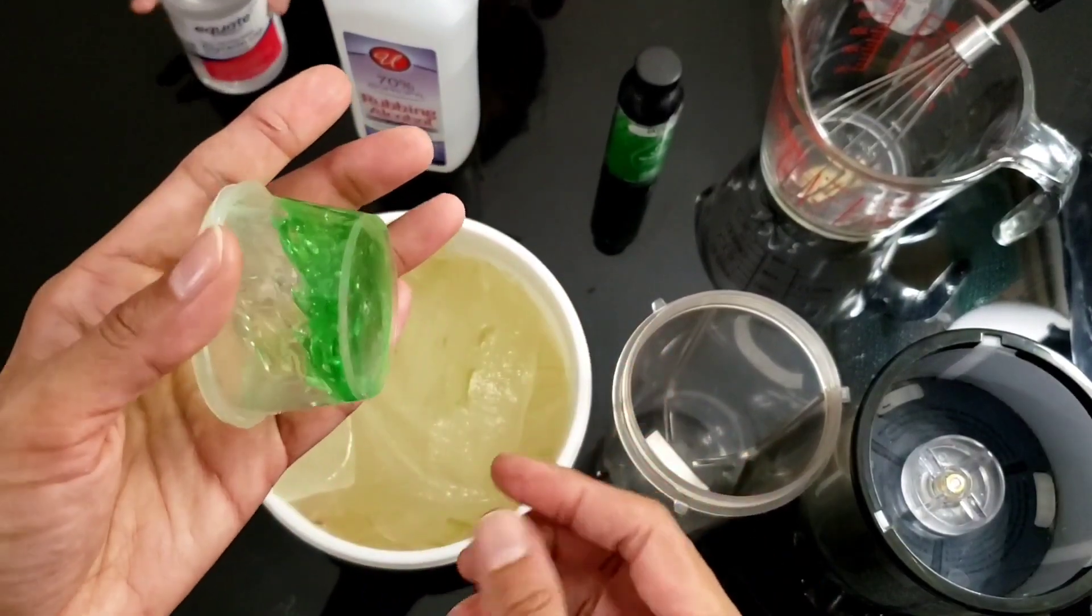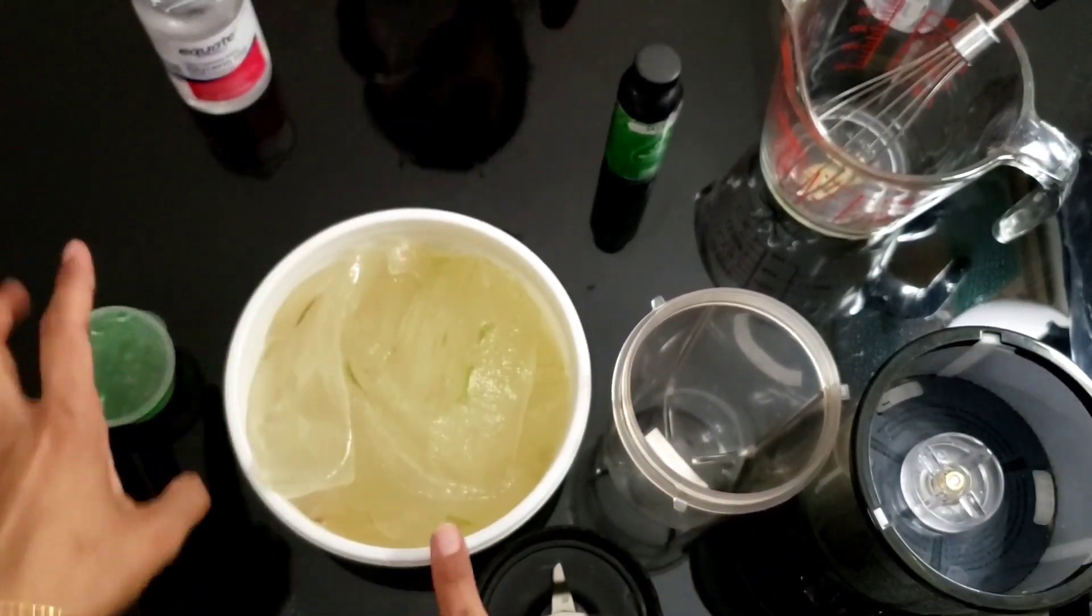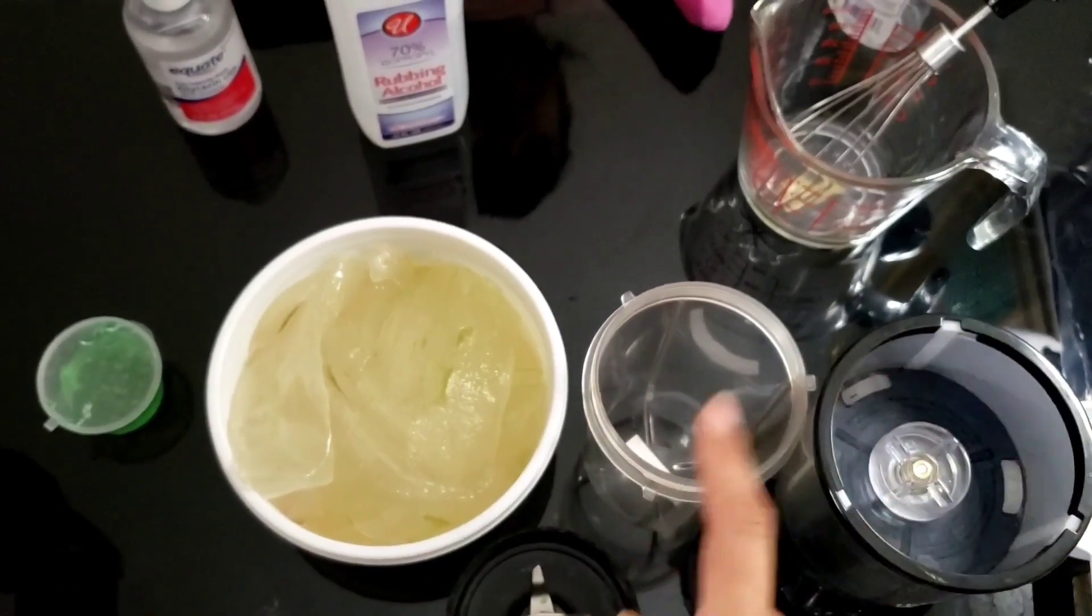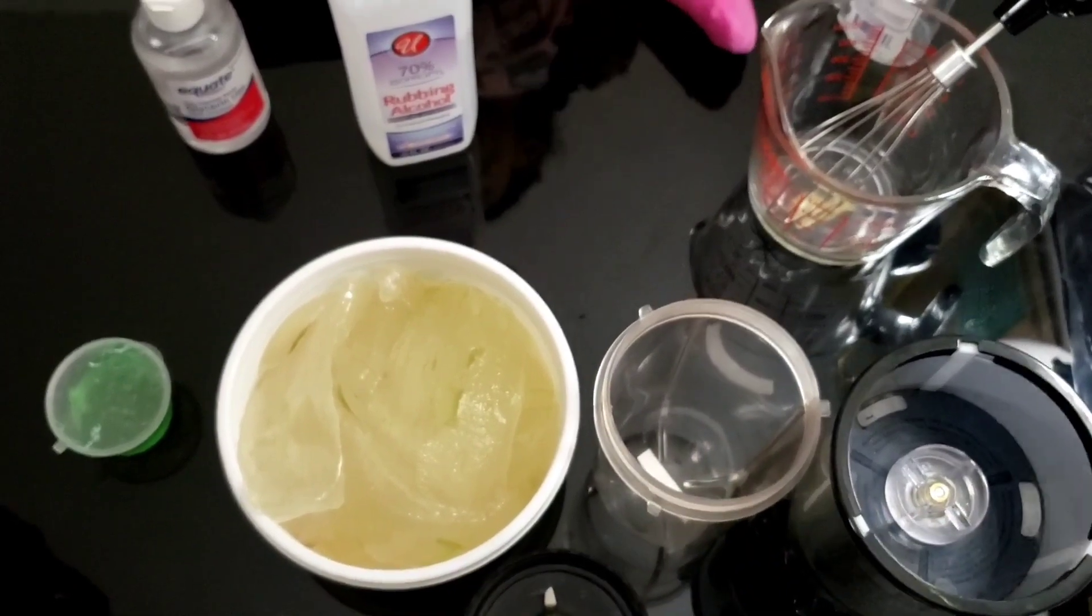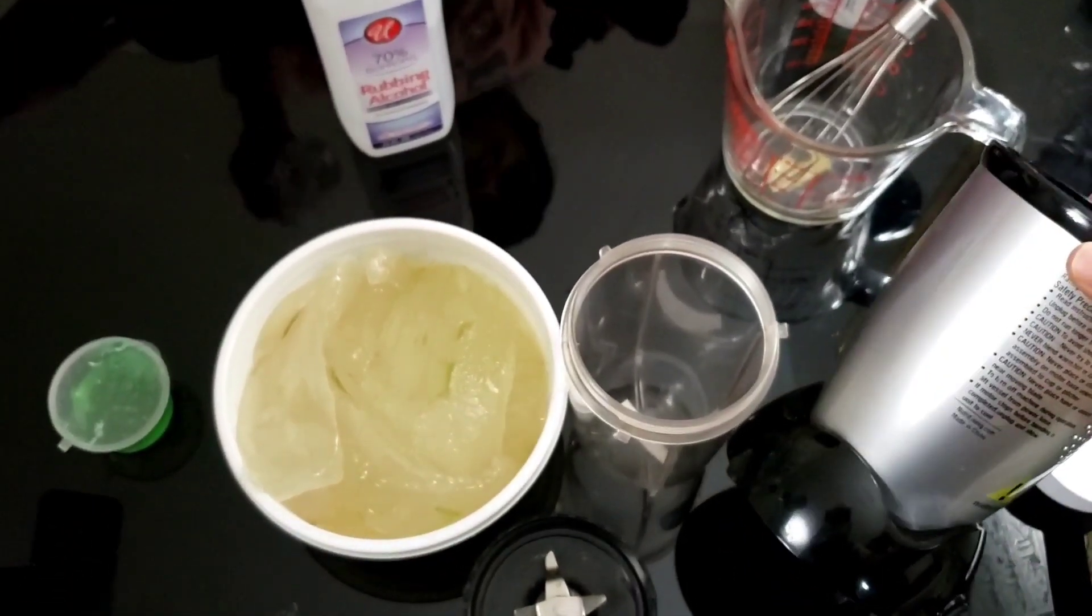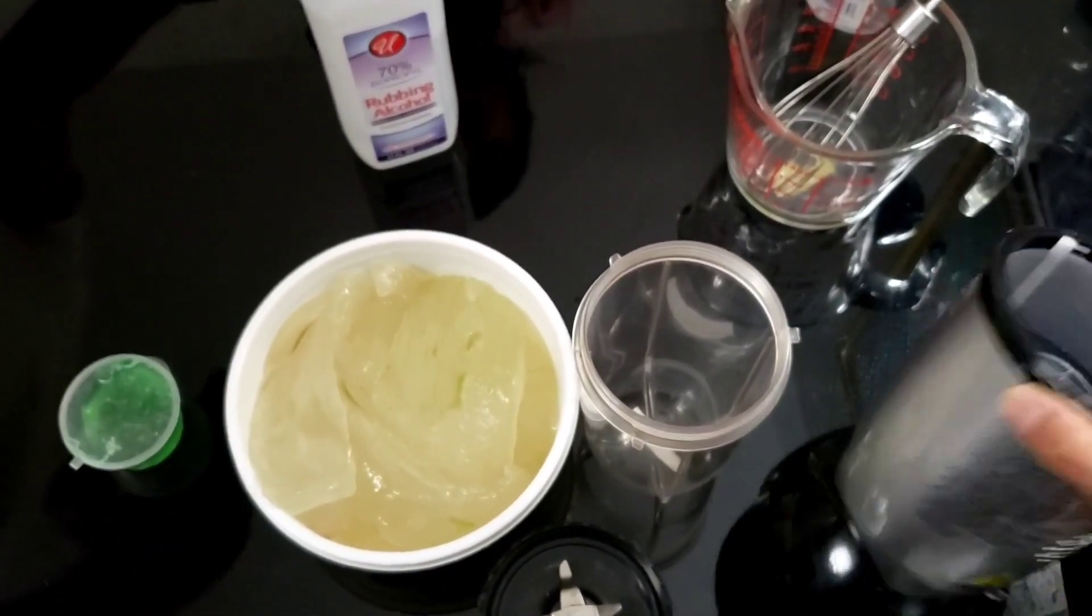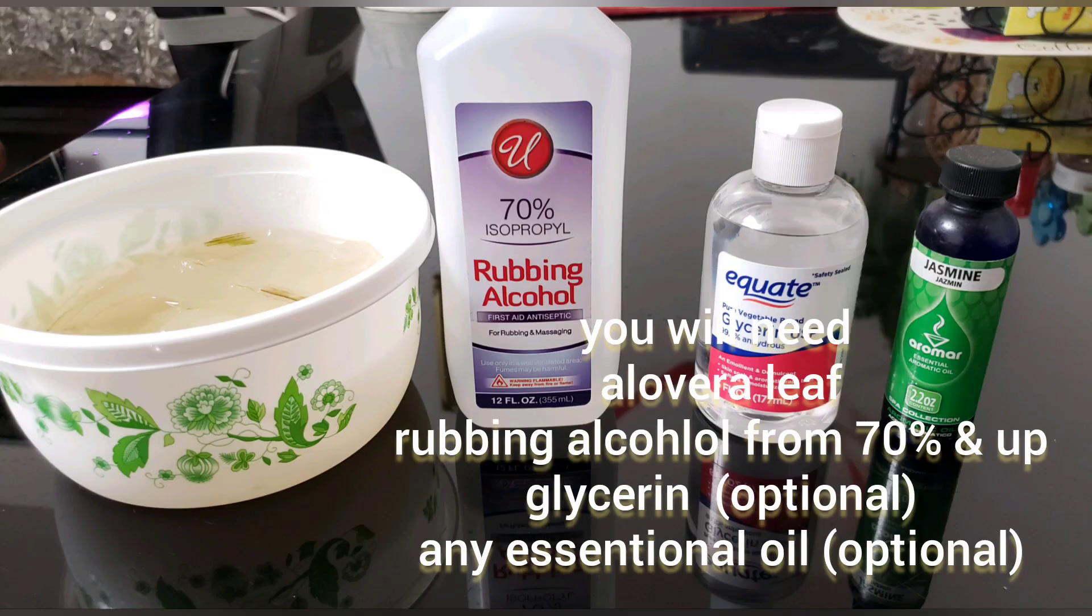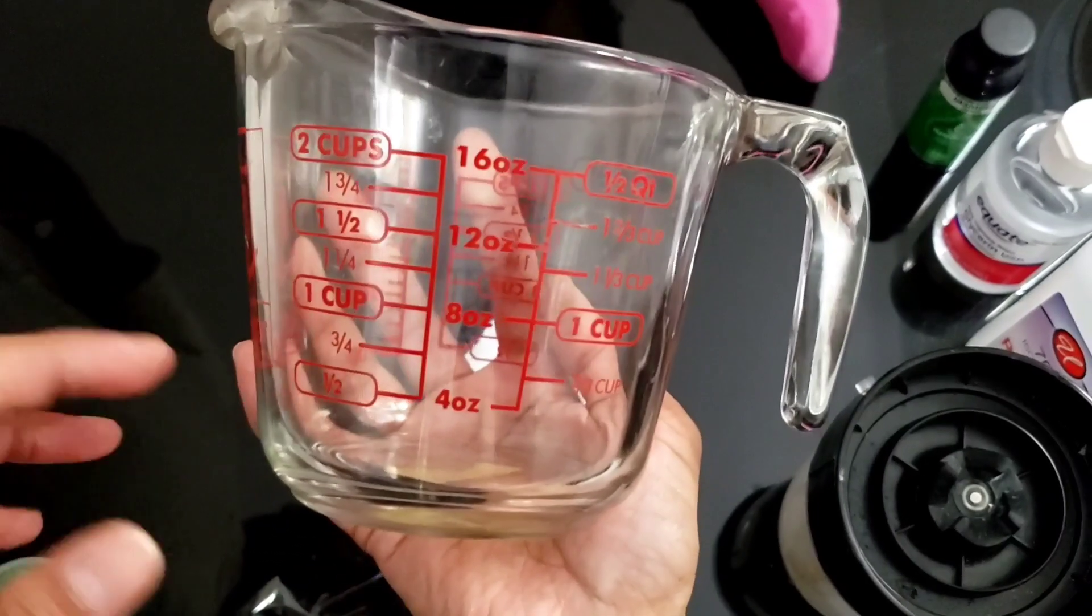So I'm going to be using this - the aloe vera from inside the aloe vera leaves. We're going to need any kind of blender, whatever you have. I'm using the magic bullet and the small cup. You only need two ingredients, but the rest of them are optional.